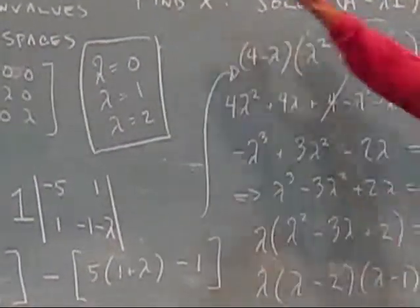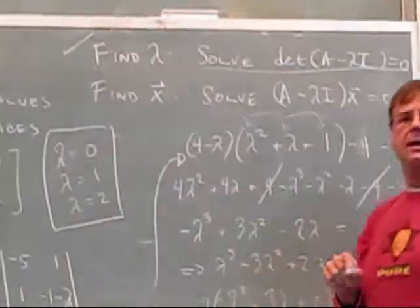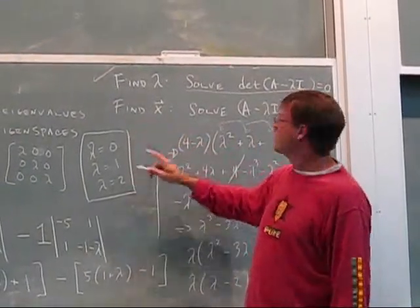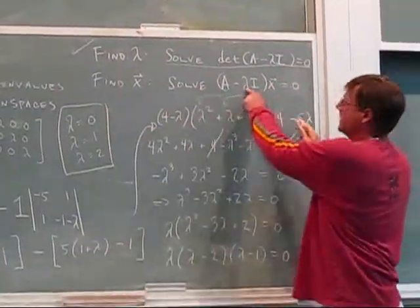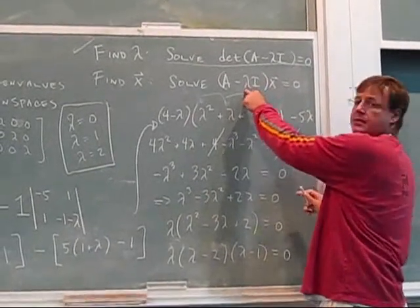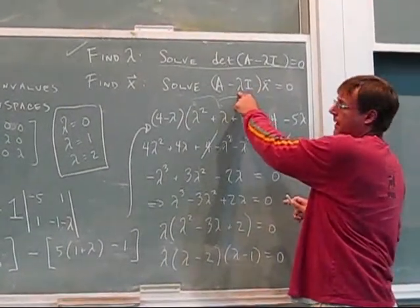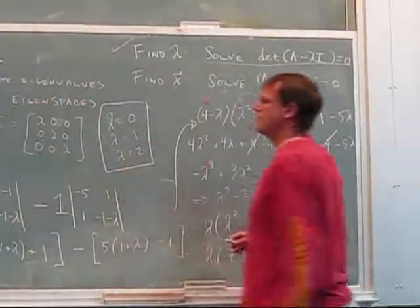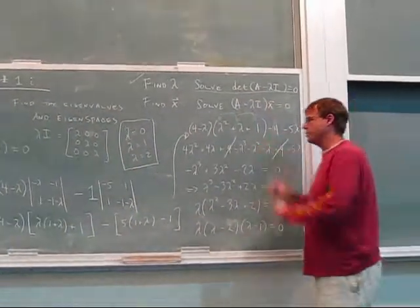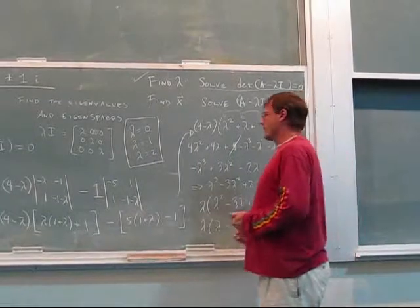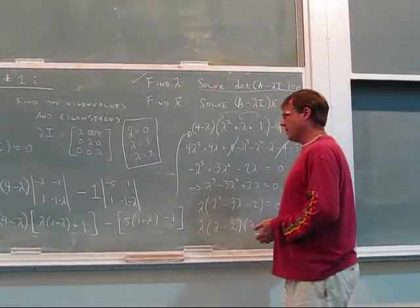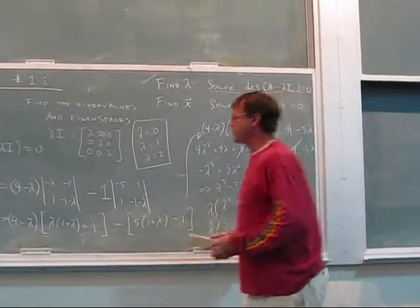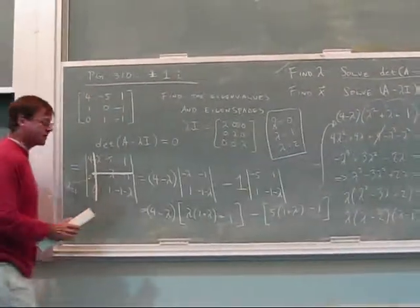Okay, so now we've basically done this. Now what we have to do is for each value of lambda, we have to go and solve this for the vector. Okay, and the vector is the eigen space. So they're interchangeable in this case. Okay, so I'm going to erase, and we're going to start finding the different values of the eigenvectors.